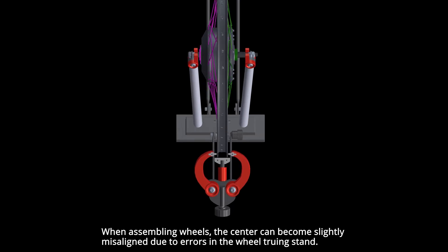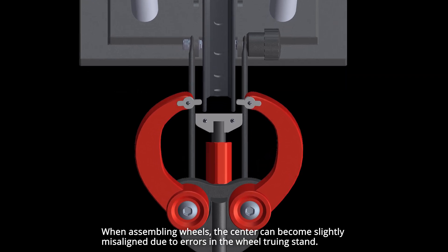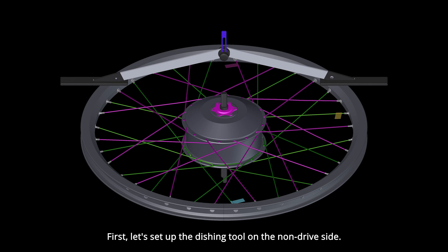When assembling wheels, the center can become slightly misaligned due to errors in the wheel truing stand. To correct this, a tool called the wheel alignment gauge, or centering gauge, is used. First, let's set up the dishing tool on the non-drive side.